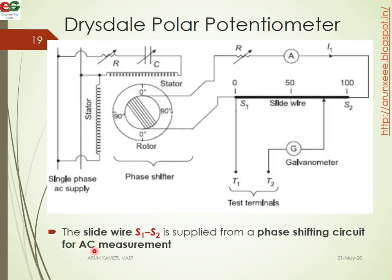The first example is the polar type potentiometer — the Drysdale potentiometer. Looking at the figure, the input AC is applied to two coils, the first coil and the second coil, which are connected in parallel to each other. The current will have a 90-degree phase difference. This acts as the rotor, and the output voltage developed is connected to the slide wire, marked as S1 and S2, which are the test terminals.